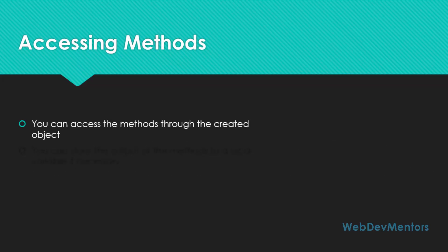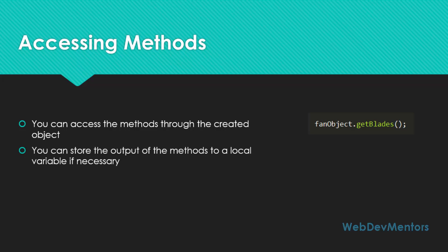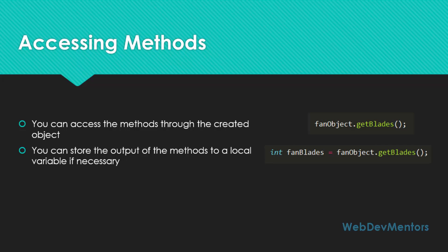How do you access the methods of the class through the object? You can access the methods through the created object just like variables. It will look like this: fanObject.getBlades(). You can see that variables don't have braces, but methods will have opening and closing braces. You can store the output of the methods into a local variable: Integer fanBlades is equal to fanObject.getBlades(). The blades is an integer — as seen in the last video, I created an integer variable named blades with the value 3 — so fanBlades will equal 3.